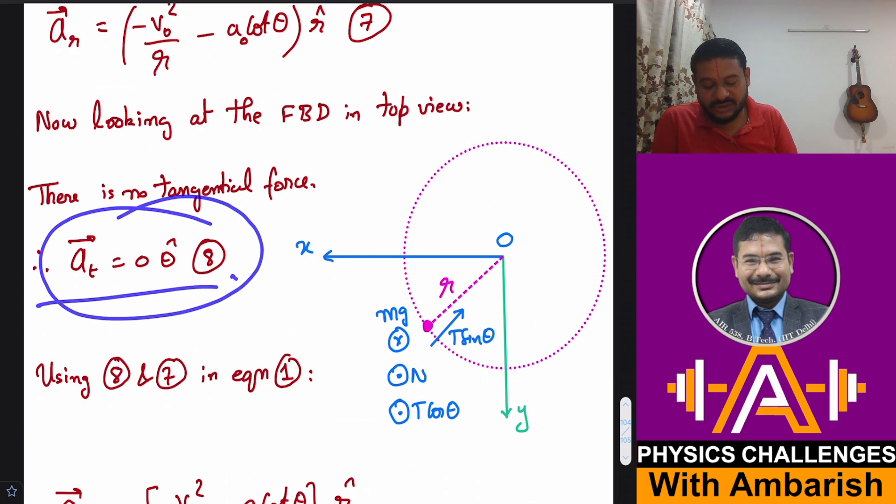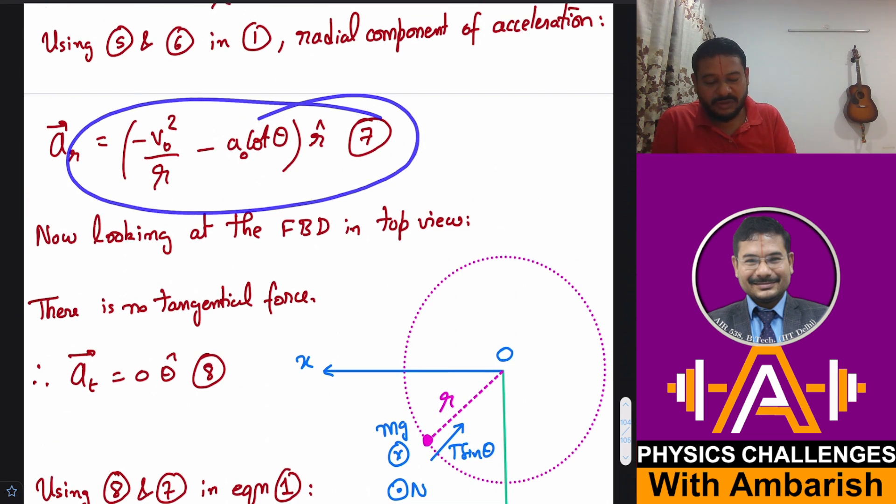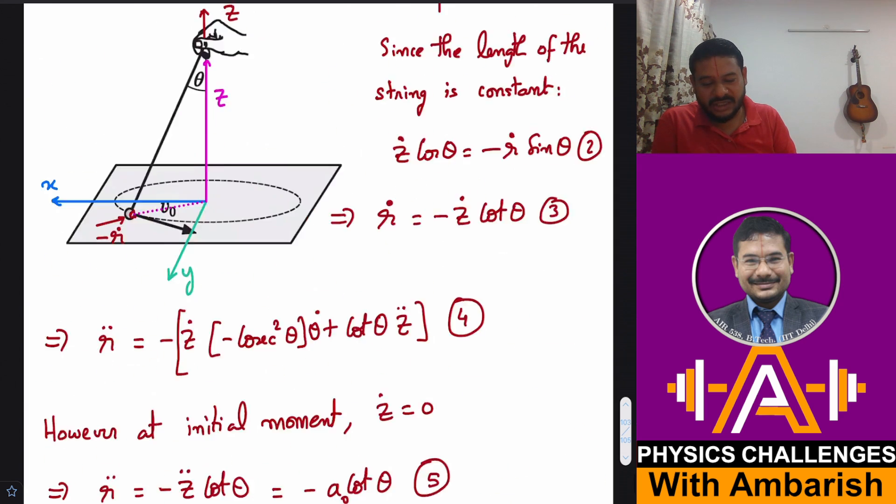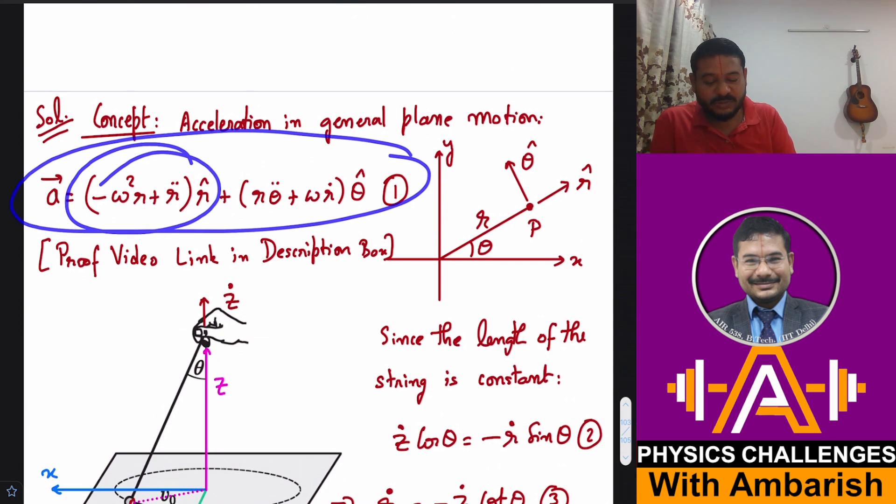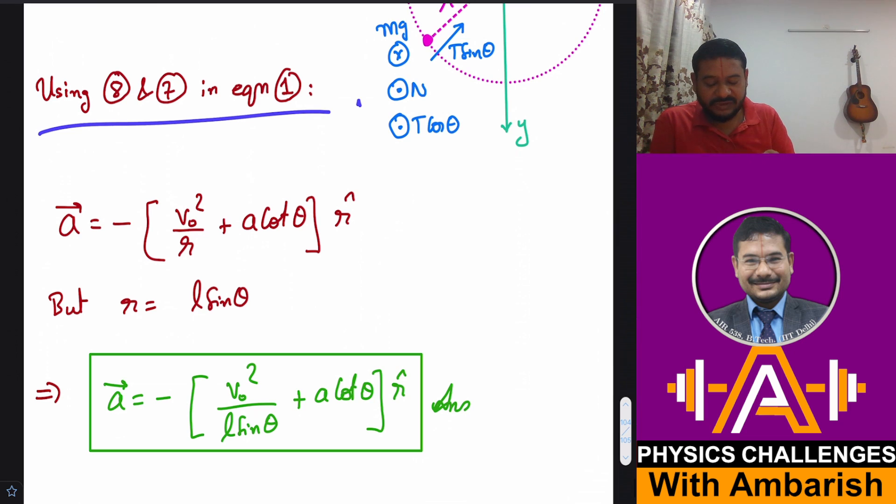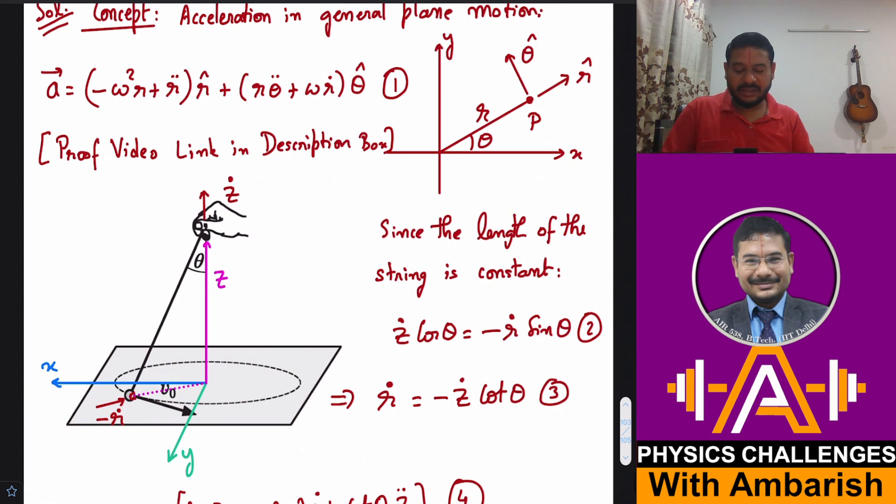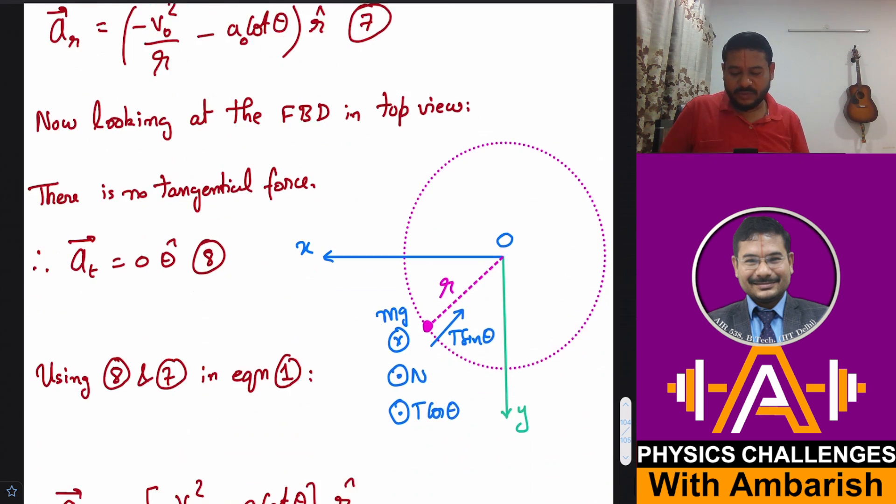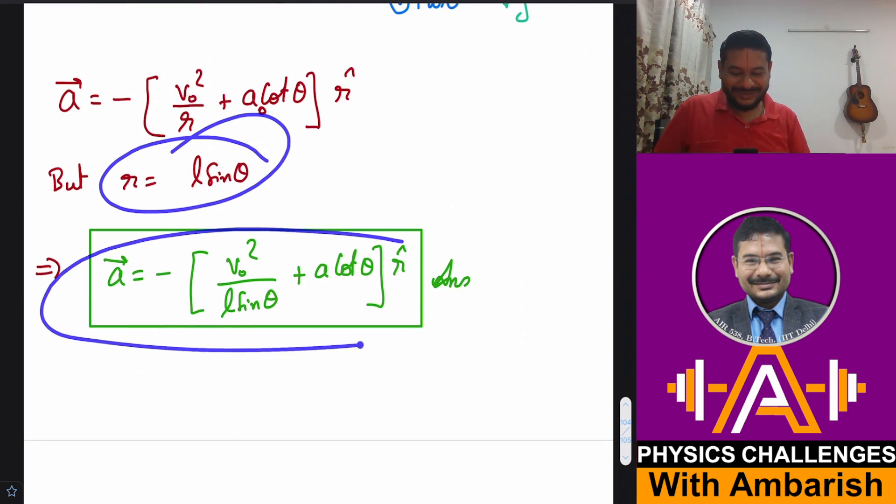So our job is simplified because at this moment there is no force acting in the direction perpendicular to the radius, therefore tangential acceleration is zero. So tangential acceleration is 0 θ̂ and centripetal acceleration we already found out. And using seven and eight we can just write equation one. We have figured out this part and this part is of course zero, and just substitute to get the net acceleration. So using eight and seven in equation one we get -V₀²/r + A₀ cot θ r̂. Again this should be A₀ cot θ according to the question. And r is L sin θ, so just put r as L sin θ, and this is your final answer.